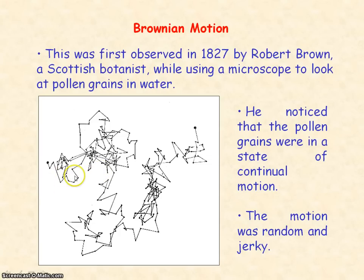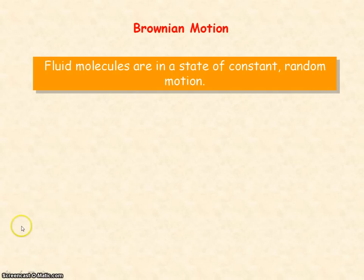This diagram is showing you the random and jerky path of a single pollen grain. Brownian motion provides evidence that the molecules of a fluid are in a state of constant random motion.